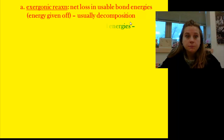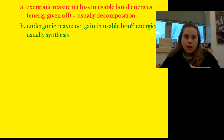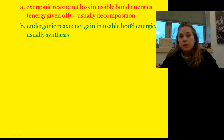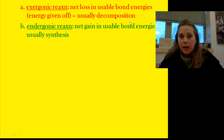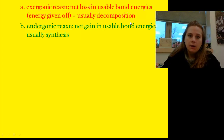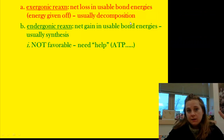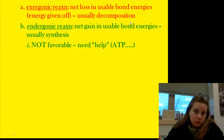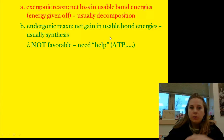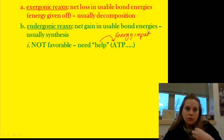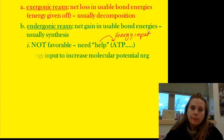Another type is endergonic reactions, which means there's a net gain in usable bond energy. These are usually synthesis reactions, and energy must be put in to make them happen — the buildup of bigger molecules. Since they require an energy input, they're not favorable on their own, and that help usually comes in the form of ATP, which provides our usable quantities of energy.